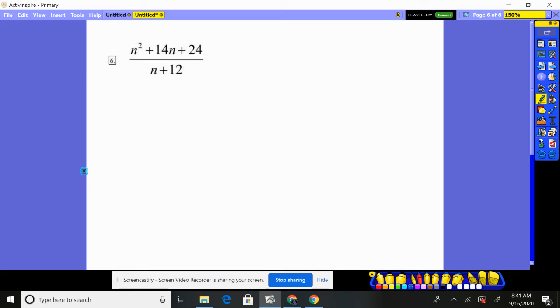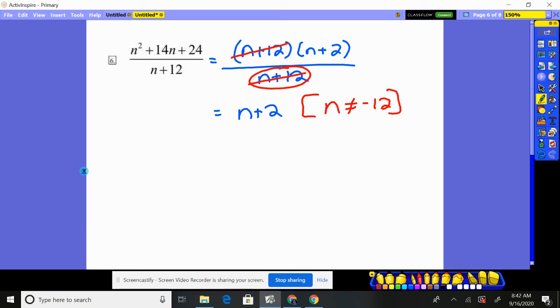Number 6: what multiplies together to give me 24 and yet adds together to give me 14? Well, the bottom being n plus 12 is probably a good indication that it's n plus 12 and n plus 2. And then we can see the n plus 12s are going to cancel out. We're left with an answer of, hey, that's just n plus 2. But we must remember to put the restriction that n can't be—what would create a 0 right here? If n happened to be negative 12, it would create a 0 in the denominator, and then you wouldn't be able to solve it. So we must put that restriction.